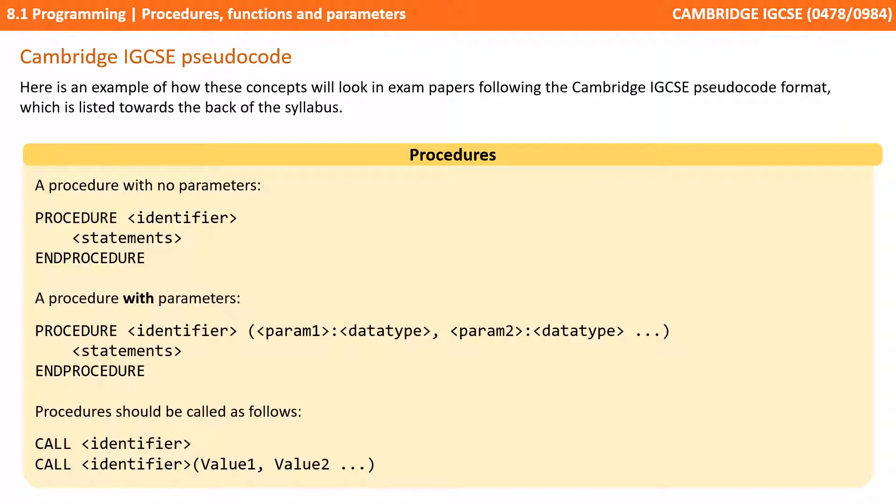Let's actually look at how some of these concepts will appear in your exam following the Cambridge IGCSE pseudocode format. Now one important thing to mention here which we haven't discussed so far is that both procedures and functions can either be supplied with no parameters or with parameters. Parameters are other variables that you pass in to the procedure and function when you call them.